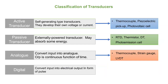Passive transducers are those in which electrical parameters like resistance, inductance, or capacitance change with the change in the input signal. These transducers require an external power source for energy conversion. In such transducers, electrical parameters like resistance, inductance, or capacitance cause a change in voltage, current, or frequency of the external power source. Examples include resistive, capacitive, and inductive transducers, as well as RTD, thermistor, and photoconductive emission cell.